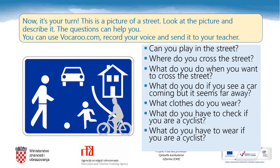Now, children, it's your turn. Here we have a picture of a street. Look at it carefully and describe it. The following questions can help you: Can you play in the street? Where do you cross the street? What do you do when you want to cross? What do you do if you see a car coming but it seems far away? What clothes do you wear? What do you have to check if you are a cyclist? What do you have to wear if you are a cyclist? You can use vocaroo.com to record your description and then send the recording to your teacher.